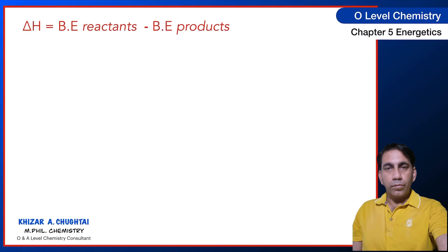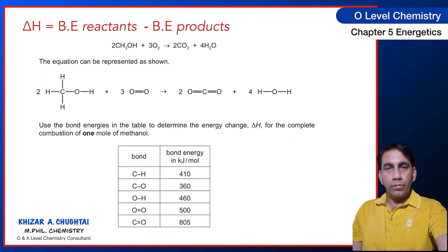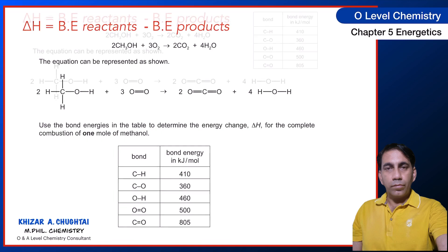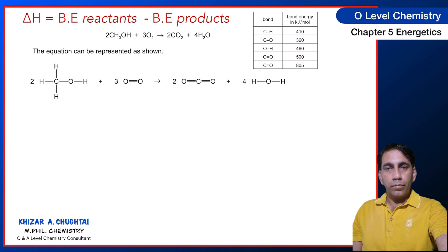I'm going to solve an example using this formula: bond energy of the reactants minus bond energy of the products. For example, two moles of methanol are allowed to react with oxygen in a combustion reaction to make two moles of CO2 and four moles of H2O. The first thing is to change these reactants and products into displayed formula. If displayed formula is not given in the question, you must first change them into displayed structures. In this case the formula is already given, so I'm going to apply the basic formula of enthalpy change with respect to bond energy.